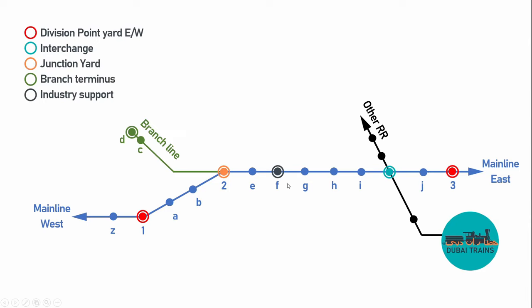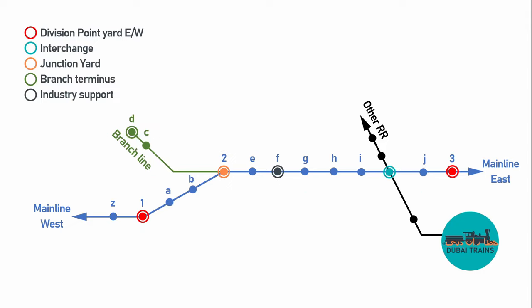The last type is the industry support yard. I drew it here at location F. This is a yard specifically dedicated and designed to support one industry. Let's look at some other examples, because we haven't talked about classification and classifying yet.